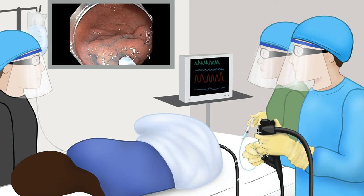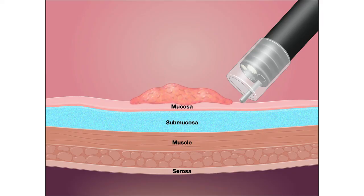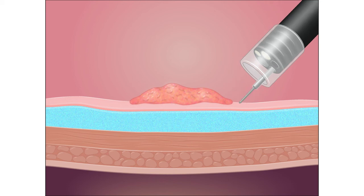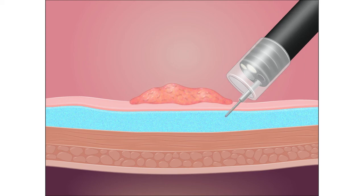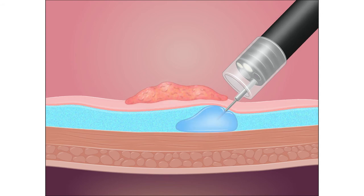If you have injected 5 cc and nothing has lifted up, that means your needle has gone through and through into the peritoneal cavity. Here is a diagram: the polyp sits on the mucosa, below which is the submucosa, then muscle, then the outside lining called serosa. You should have the needle out before you inject; the endoscopist gently pushes it down into the submucosa, then you tap gently on the plunger.